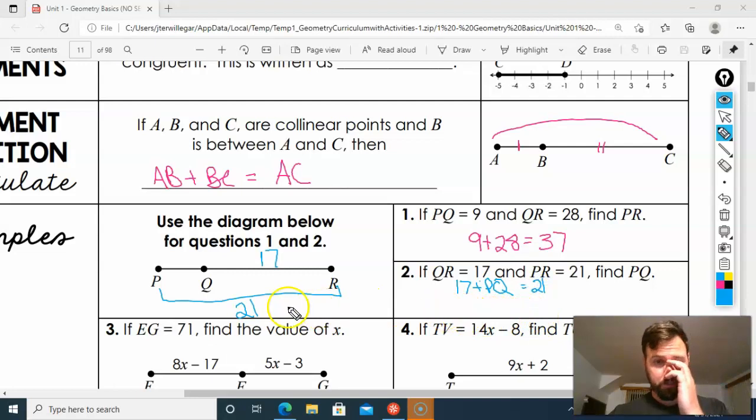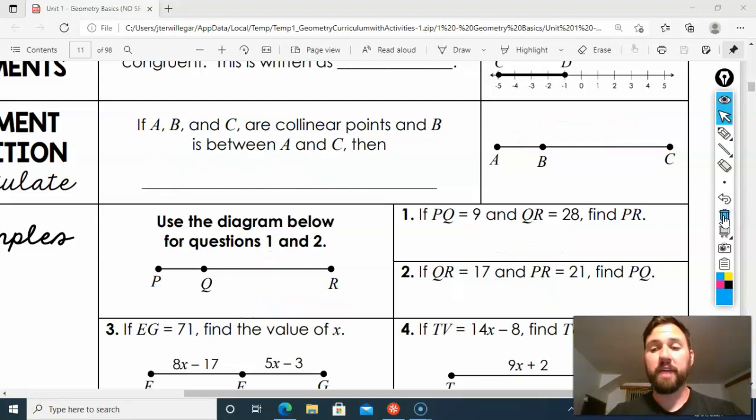equals 21, right? Because 17 plus my missing piece equals the whole thing. So I'm going to subtract 17 from both sides so I get PQ equals 4. Okay, so you were right before, we just got to make sure. Alright, so y'all, let's just pause and check time. Alright, I will do some of the eligible ones in class with you guys to make sure that we're on the right page. I'm going to move ahead to the midpoint part.